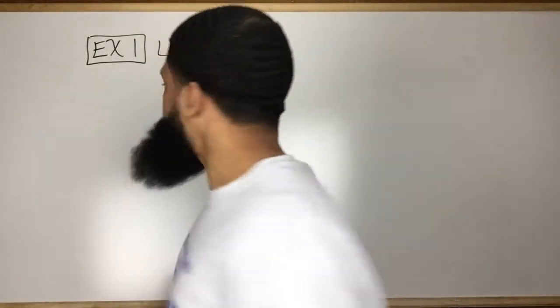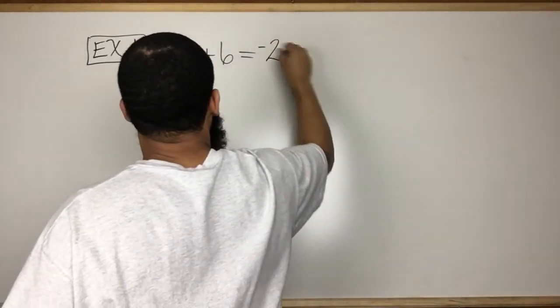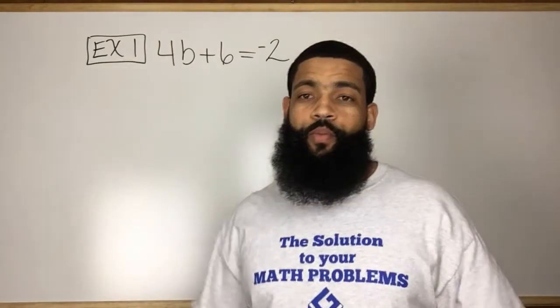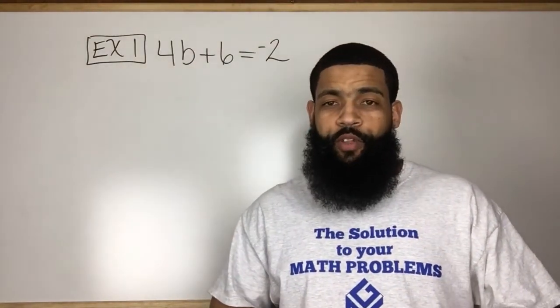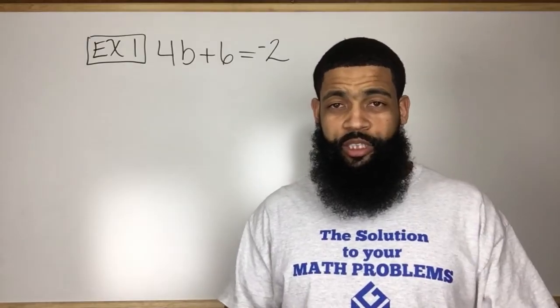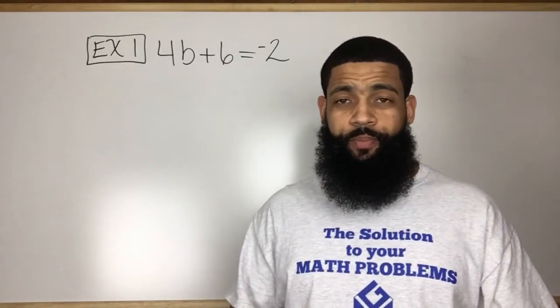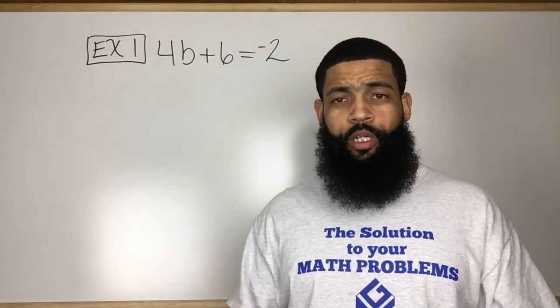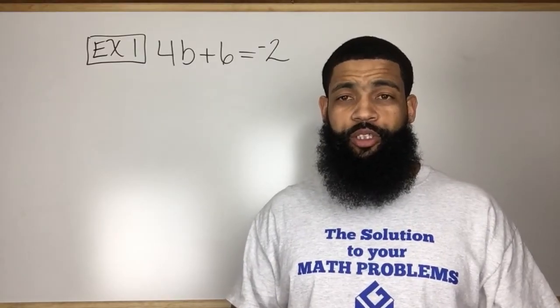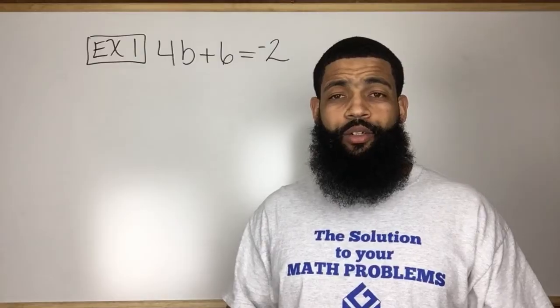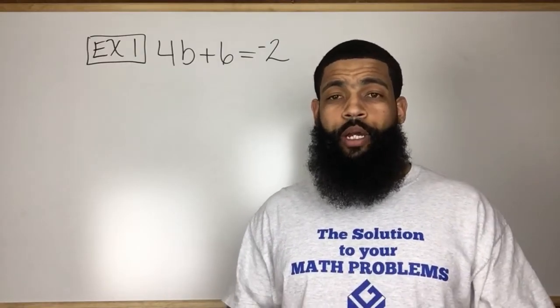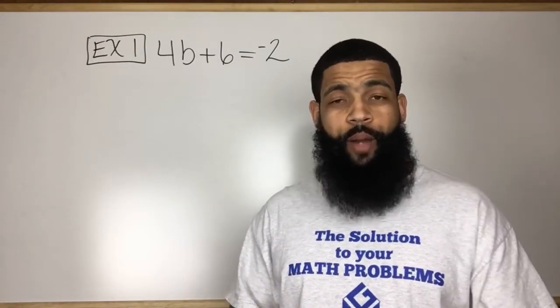4b plus 6 is equal to negative 2. Now, one thing I want to point out is that when you're solving multiple-step equations, in this case it's just a two-step equation, but even as we move on and you have multi-step equations, when you're trying to isolate your variable or get the variable by itself, you have to actually work backwards from order of operations.